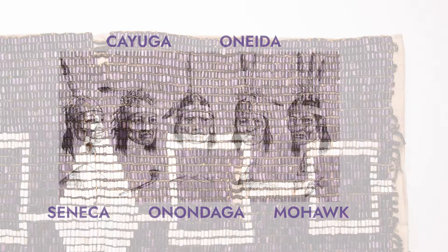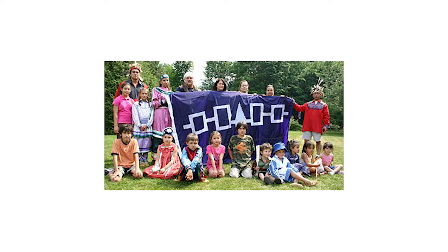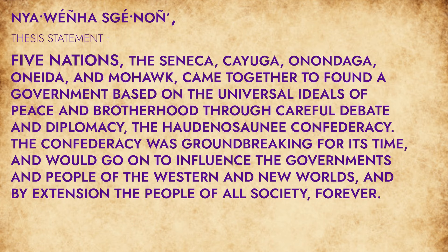Five nations, later six, came together to form a confederacy, a culture, and a democracy that spread the wings of new forms of government like the bicameral legislature to later give to the new world. Five nations — the Seneca, Cayuga, Onondaga, Oneida, and Mohawk — came together to found a government based on the universal ideals of peace and brotherhood through careful debate and diplomacy: the Haudenosaunee Confederacy. The Confederacy was groundbreaking for its time and would go on to influence the governments and people of the Western and New Worlds and the people of all society forever.